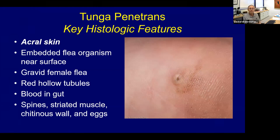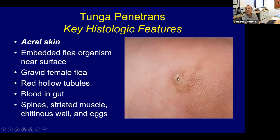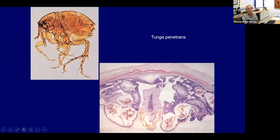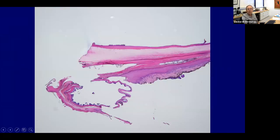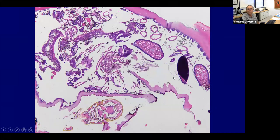Tunga penetrans is seen on acral skin. It's a sand flea — a gravid female flea that actually embeds in your skin and tunnels, making a little hole through which it breathes. Under the microscope you see the actual organism with a tunnel to the surface. It leaves your skin and gets in the sand, then burrows into the next person. This can develop underneath someone's nail.